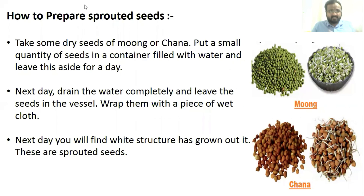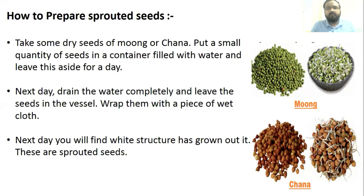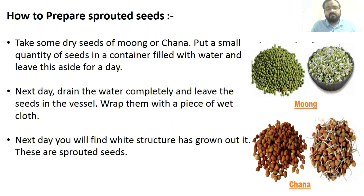How to prepare sprouted seeds: take some dry seeds of moong or chana and put them in a container filled with water, then leave aside for a day. The next day, drain the water completely and wrap the seeds with a piece of wet cloth. The following day, you will find that a white structure has grown out — these are sprouted seeds.